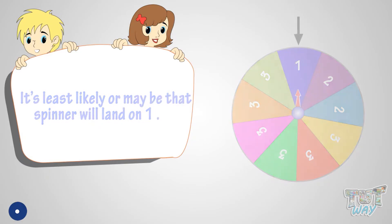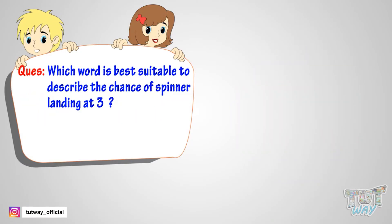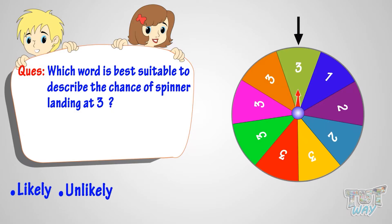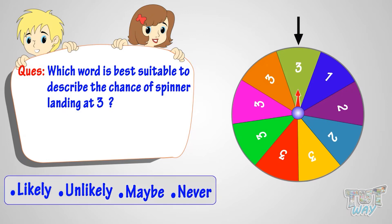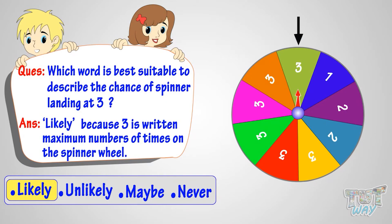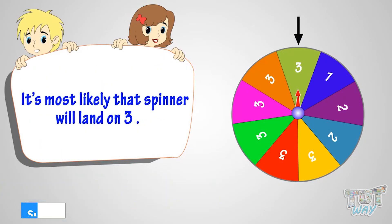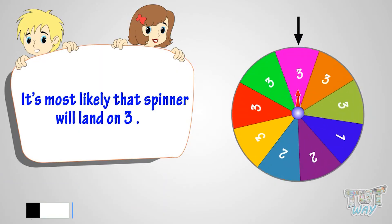Now, which word is best suitable to describe the chance of spinner landing at three? Likely, unlikely, maybe, or never? The answer is likely, because three is written the maximum number of times on the spinner wheel. So it's most likely that the spinner will land on three.